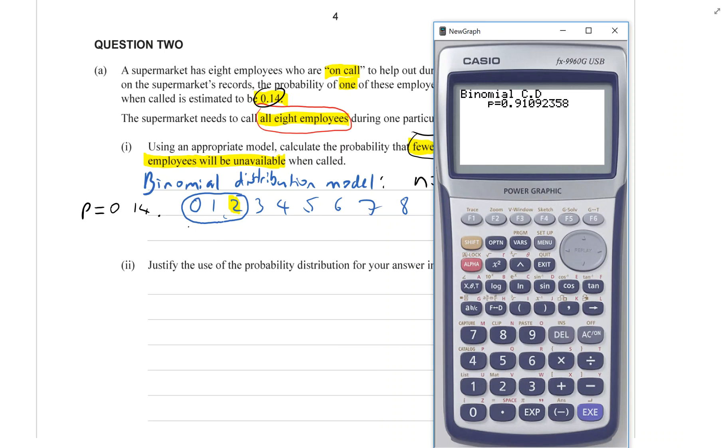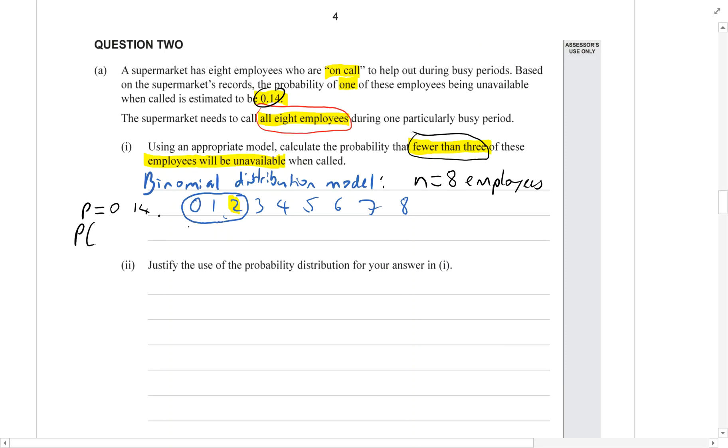We need to label what we worked out here. Let's start with the question, which was probability of there being fewer than three. So x is less than three.